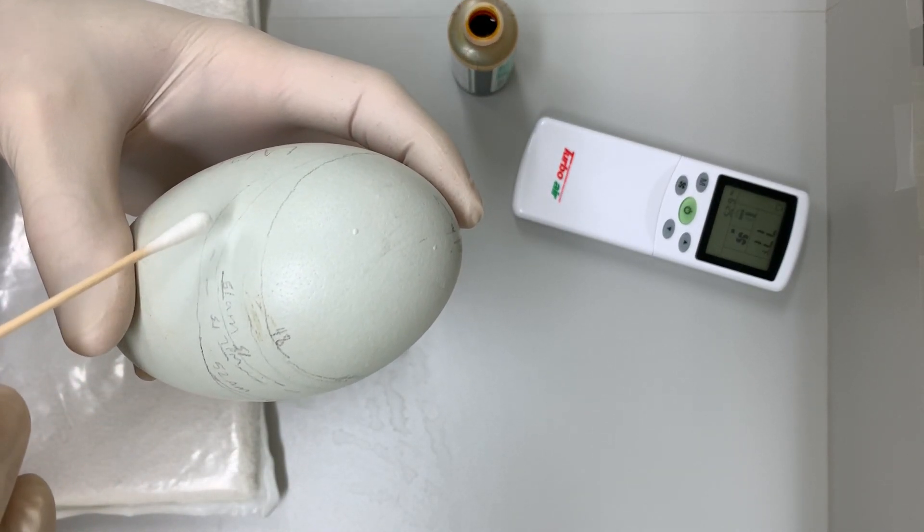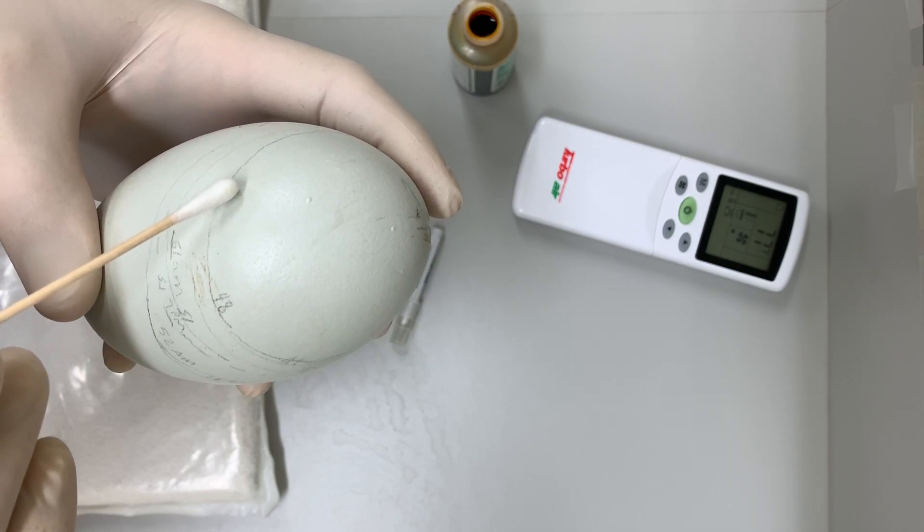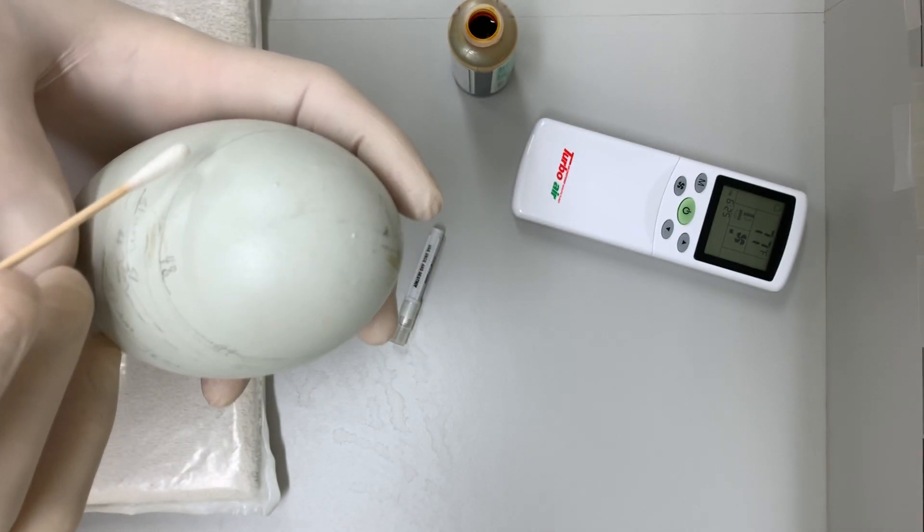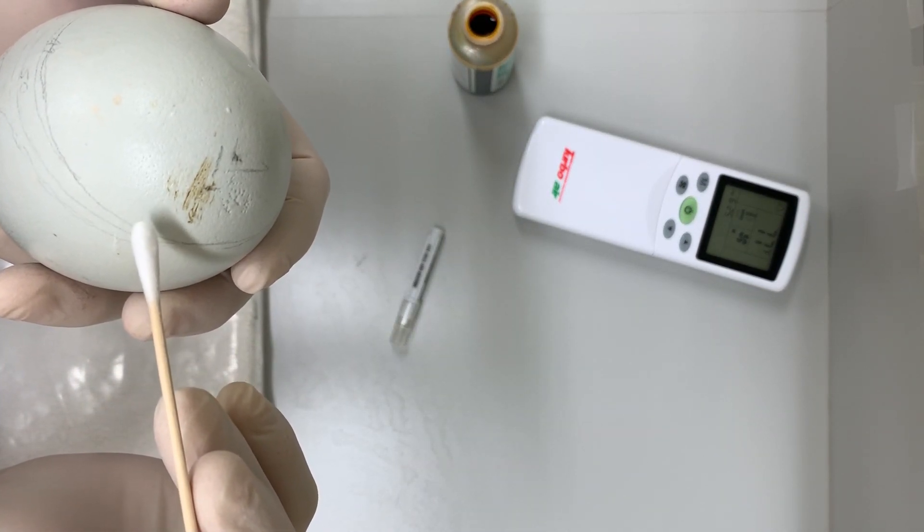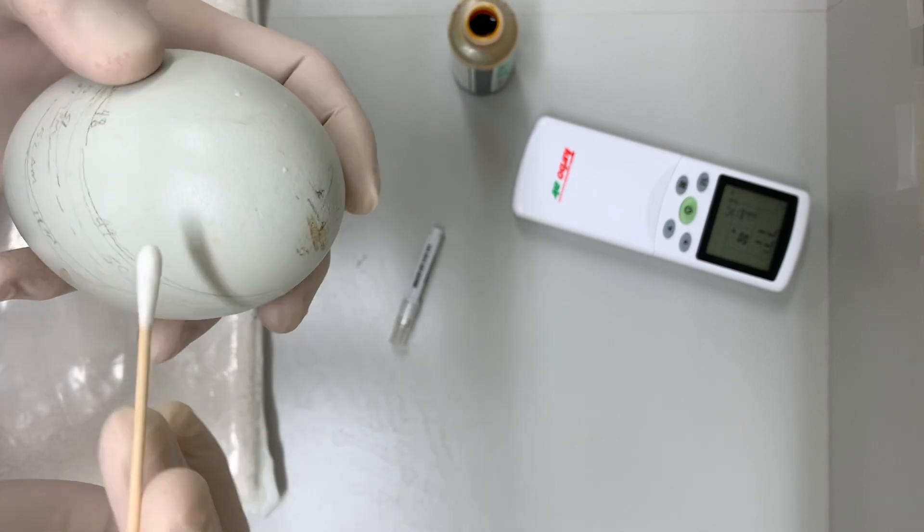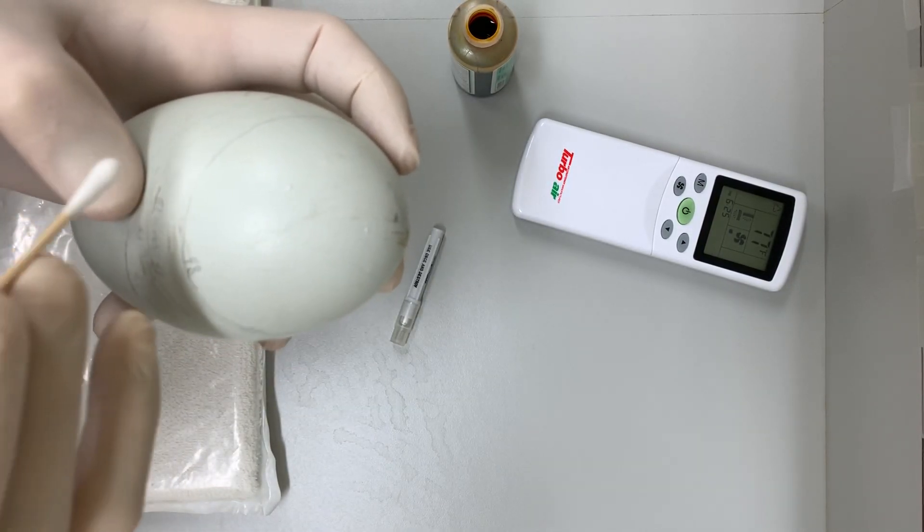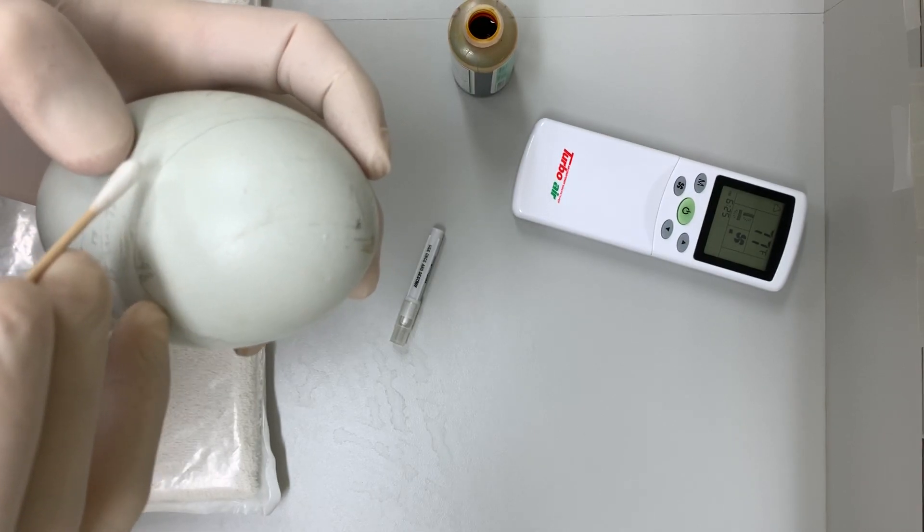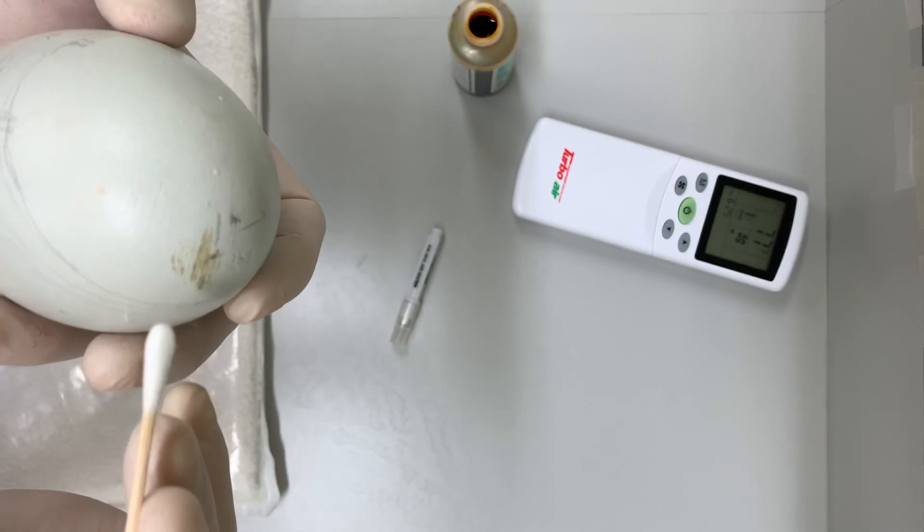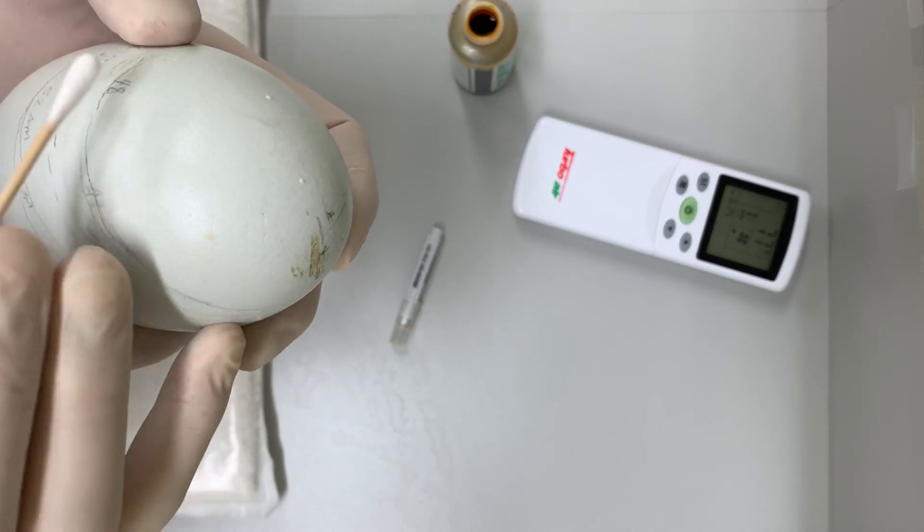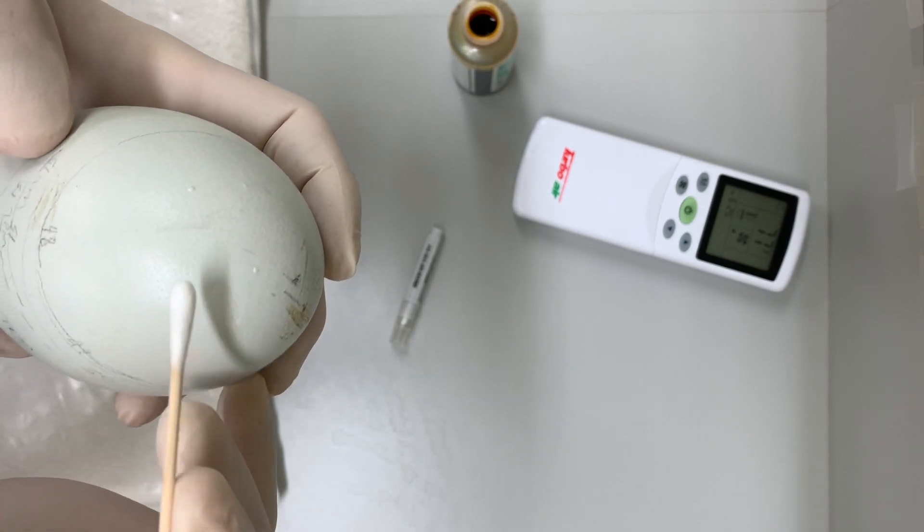His beak is right here and he will probably pip somewhere around here in the next couple days. So I'm gonna put an air hole way over here. I don't want to put the air hole right where the beak's gonna be because I don't want too much ventilation to dry the membranes there. I want it to have air exchange from here across the air cell, which will mitigate any humidity issues.